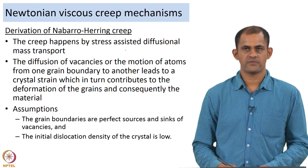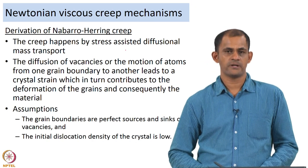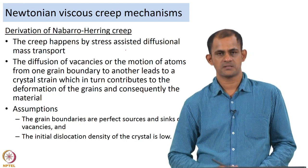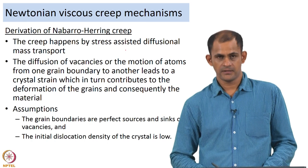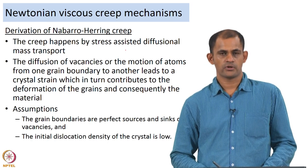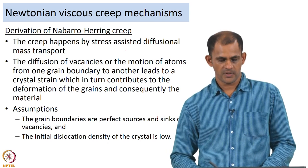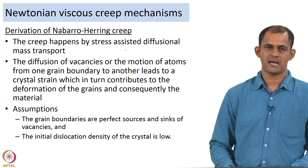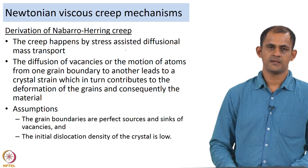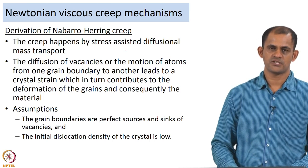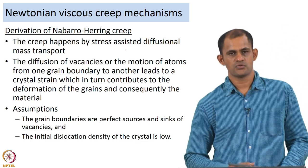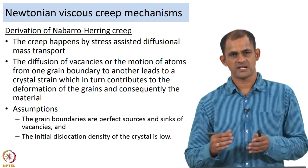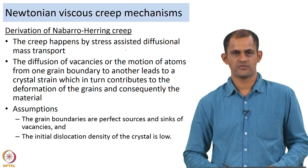The strain rate of deformation in Nabarro-Herring creep happens by stress-assisted diffusional mass transport — atoms move from one grain boundary to another, driven by stress. This mass transport leads to a crystal strain which in turn contributes to deformation of the grains and consequently the material. Nabarro and Herring developed equations to determine the strain rate of deformation by this mechanism.